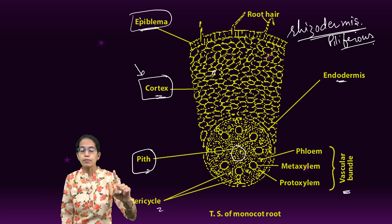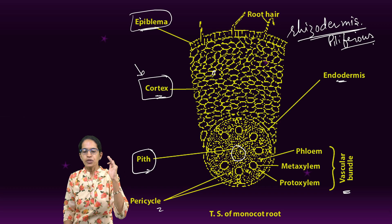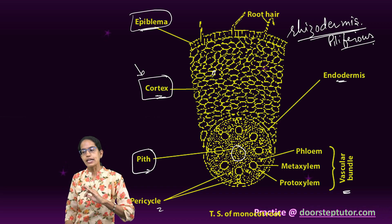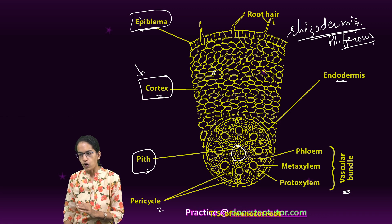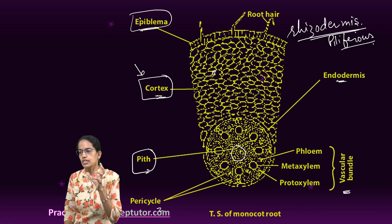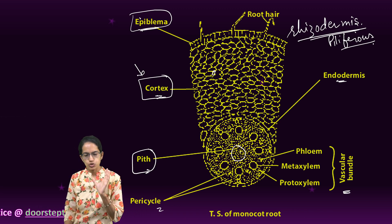In the epiblema, there is no intercellular space present. Pith has parenchymatic cells that could be either thin-walled or thick-walled and is present in the center of the endodermis layer. The main function is to store food.